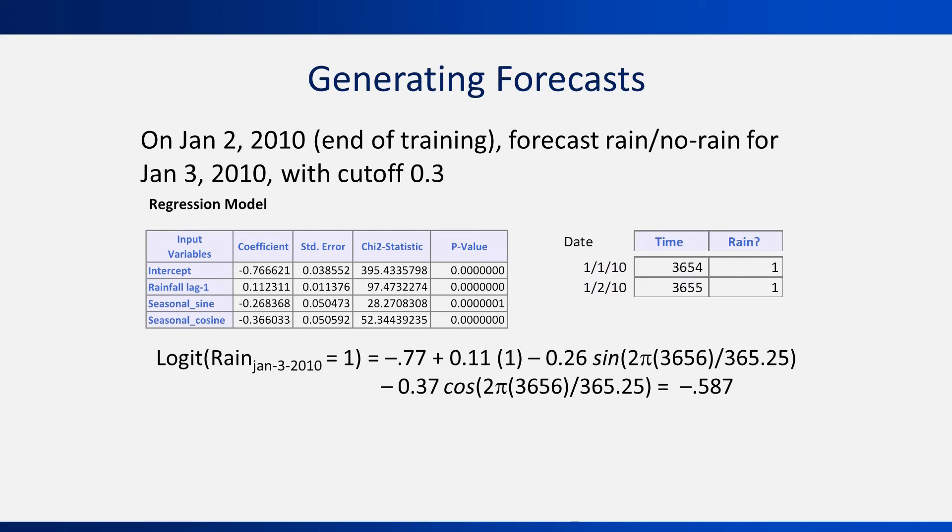To get the forecasted probability of rain, we need one more step, using the formula that we saw earlier. Using this formula, we get a probability of 0.36. This is larger than the cutoff value of 0.3 that we chose up front. So we can convert the forecasted probability to a binary forecast of rain.